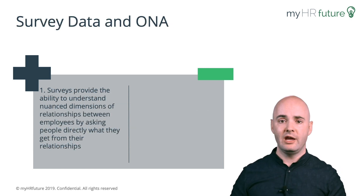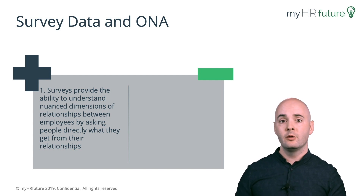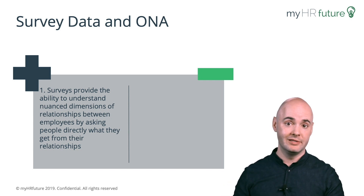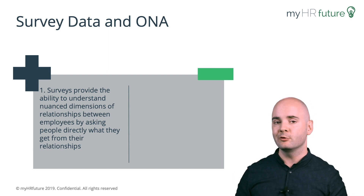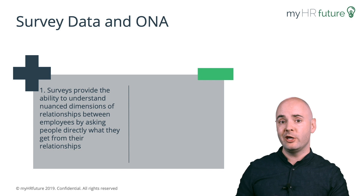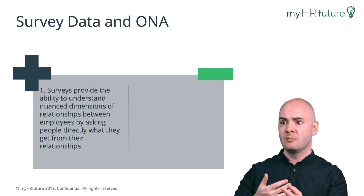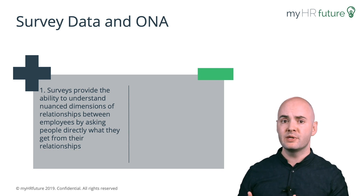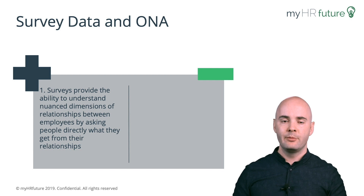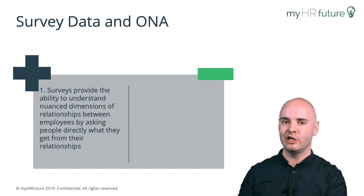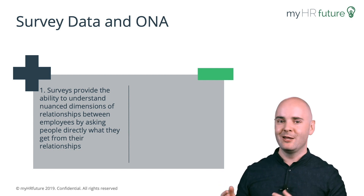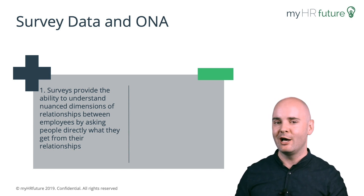Now let's talk about the survey approach to collecting organizational network analysis data. Just like with the passive approach, there are pros and cons. The biggest pro to collecting survey data is that we can understand nuanced dimensions of relationships between employees. By asking people directly, we can understand whether a relationship provides simple information to get work done, provides personal support when changes happen, provides political support to push large initiatives through, or provides energy — a sense of enthusiasm that motivates people to do a good job.